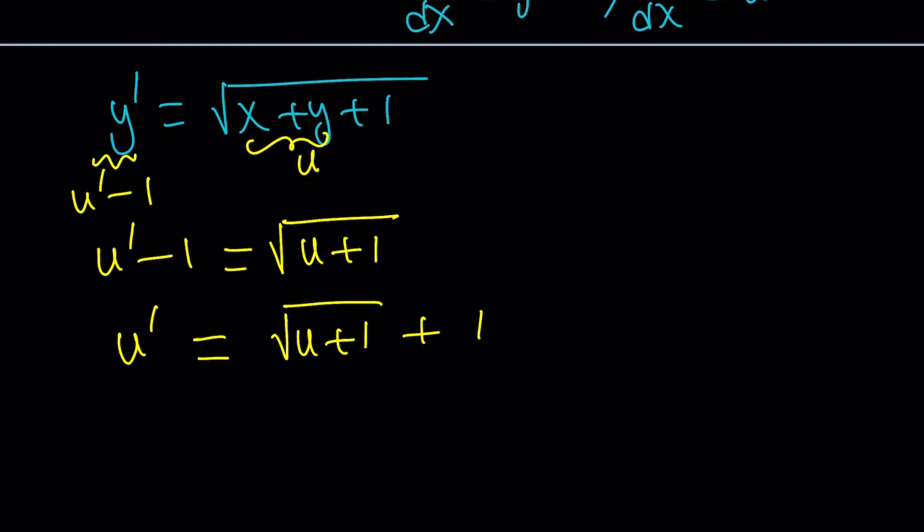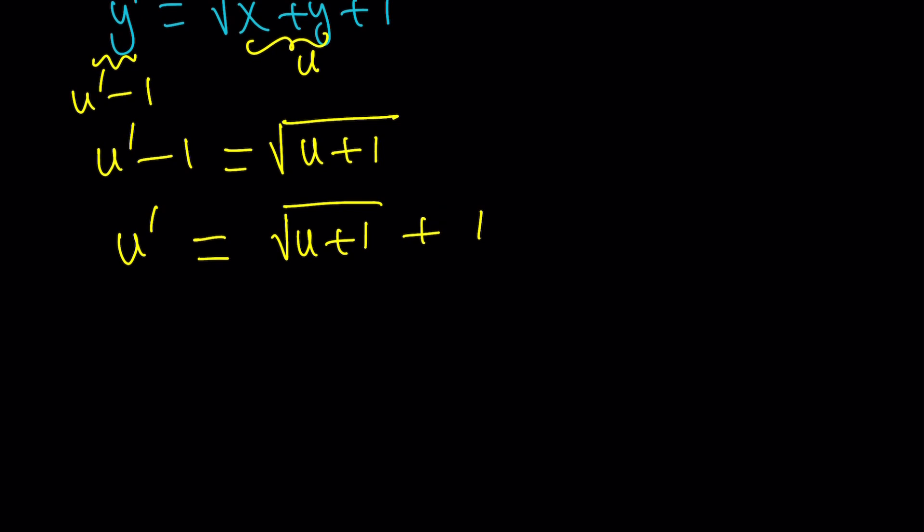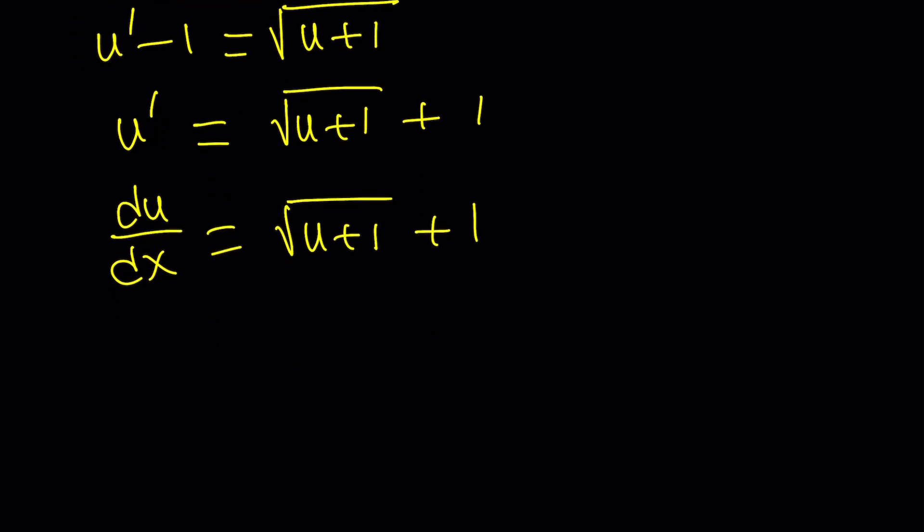Now, we want to turn this into a separable differential equation. By making this substitution, actually, we made it a separable equation. Let's write the u prime as du over dx. And then, divide both sides by this radical thing and multiply by dx. And you got yourself a separable differential equation. Awesome. And we can solve this by integrating both sides. Right? Since it's separable, we can just integrate, integrate, and we can get the answer.